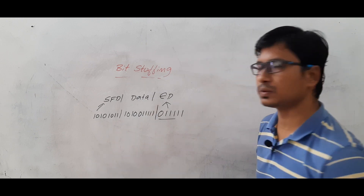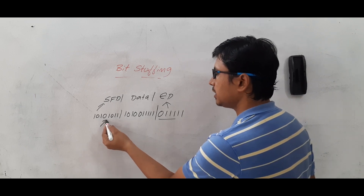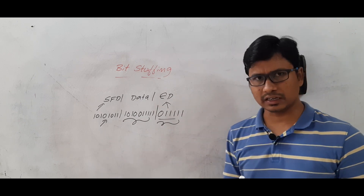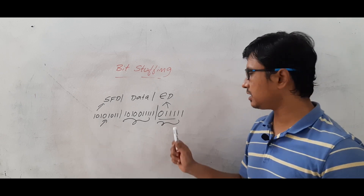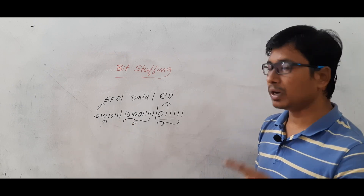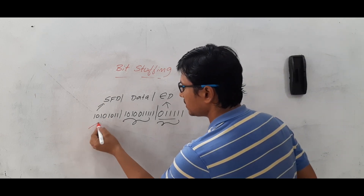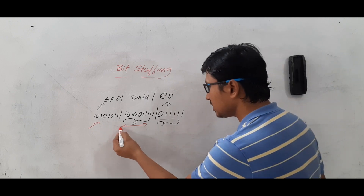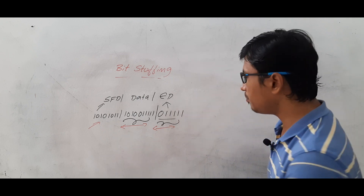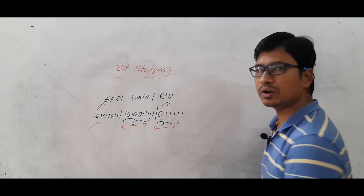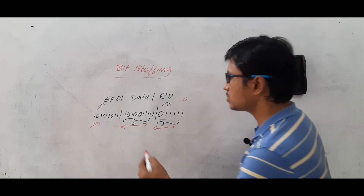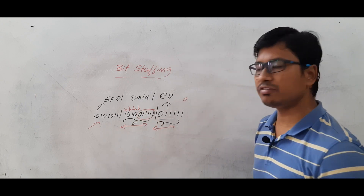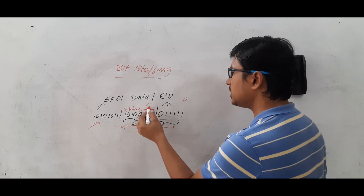The sender attaches the start frame delimiter and end delimiter to identify frame boundaries and sends the data correctly. However, when the receiver is receiving, after the start frame delimiter it begins reading data. It already knows the end delimiter pattern is 0 followed by five 1s. So when it receives 1010, then 0 followed by five 1s, it thinks that is the end delimiter.